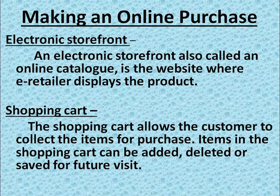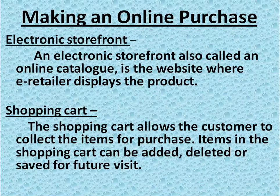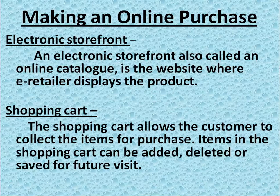The next topic is how to make a purchase online. Nowadays we are all doing online purchasing. To explain the steps for purchasing any object online, I need to first explain some points regarding online purchase. Number one is electronic storefront. An electronic storefront is also called an online catalog. It is the website where the e-retailer displays their products.